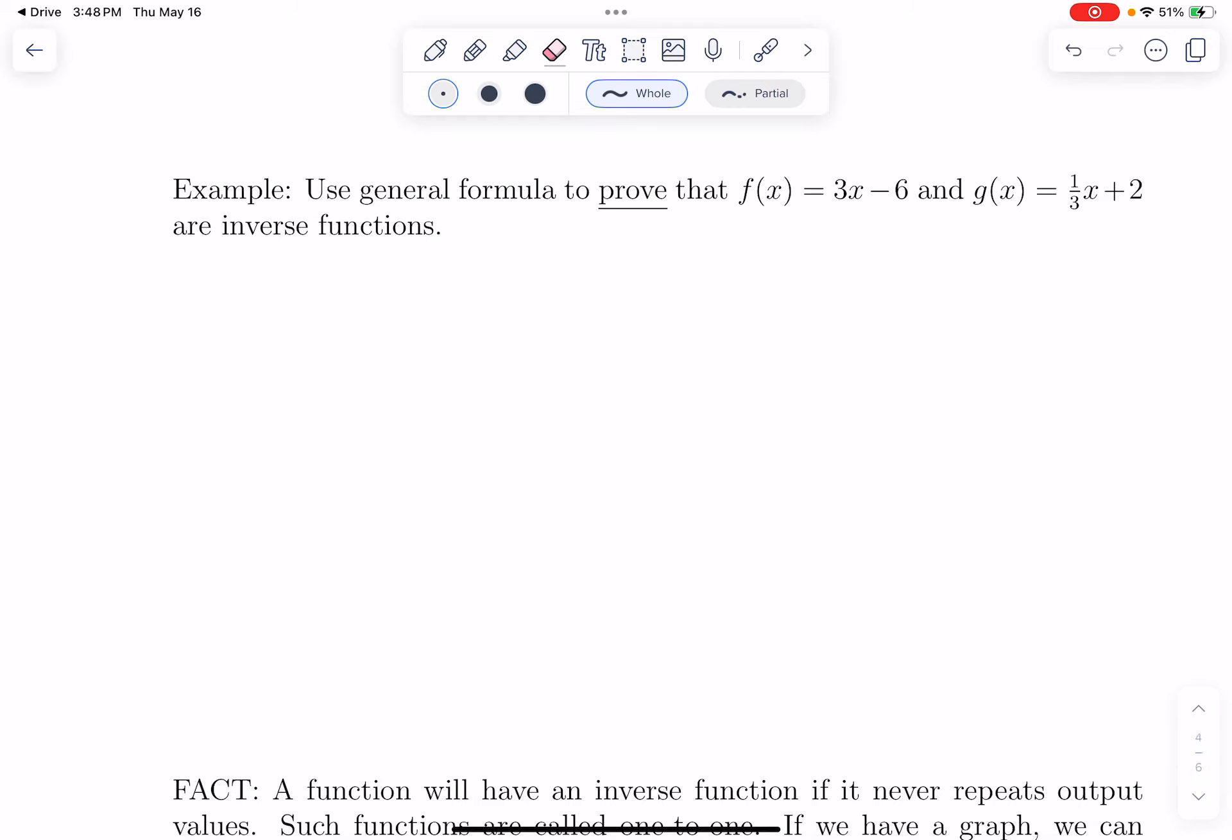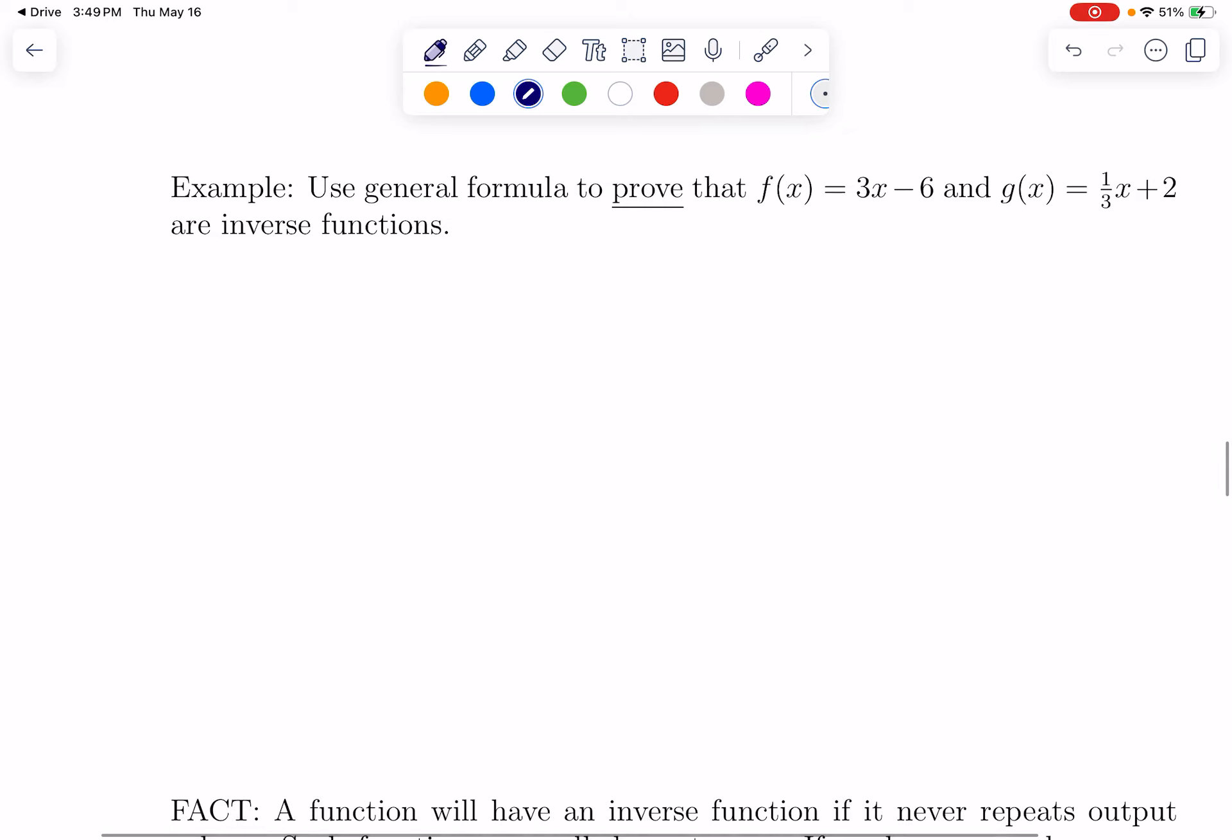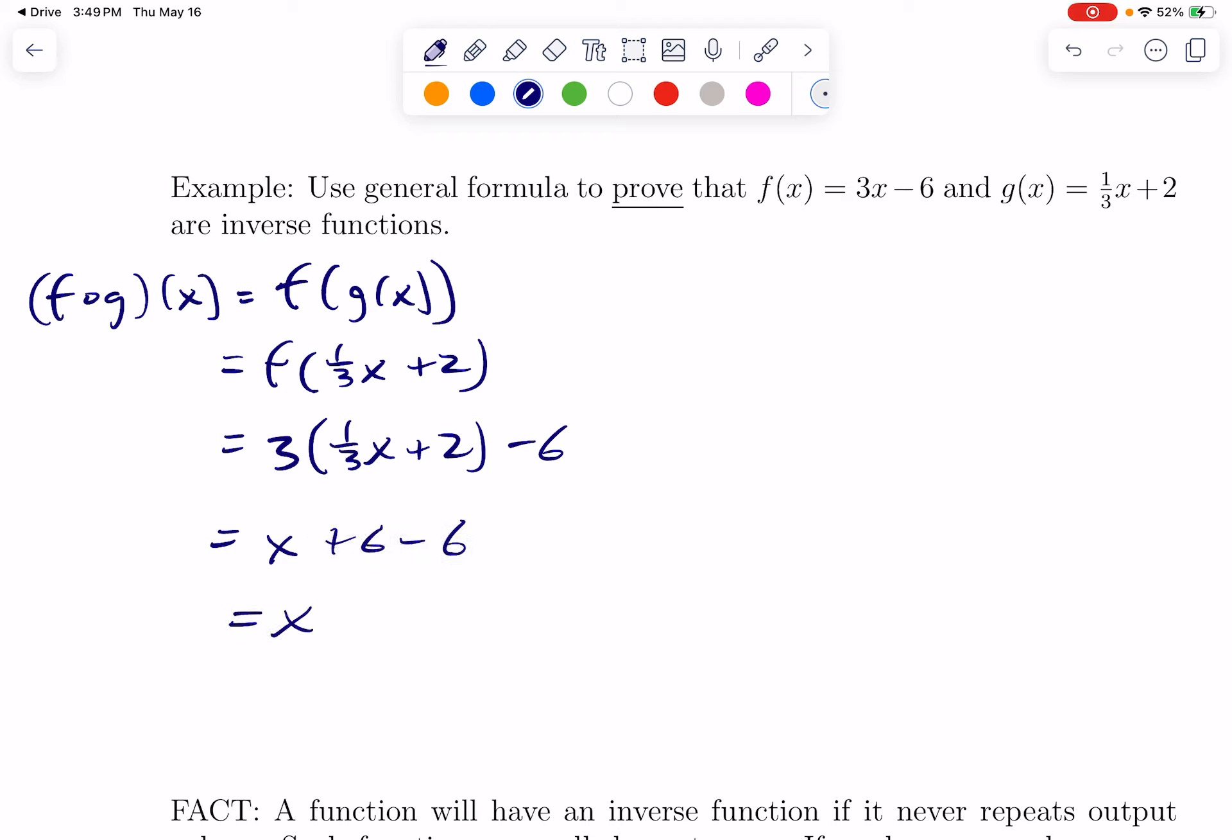Now, we could prove it very formally by literally composing the functions with a generic x in there. So, I will show this to you. This is super formal and not really the kind of thing you would need to do. But F circle G of x means F of G of x, which means F of 1 third x plus 2. F here is the function that takes 3 times its input and subtracts 6. So, 3 times this whole input. And then we subtract 6. So, I'll distribute. The 6's cancel and we get x.